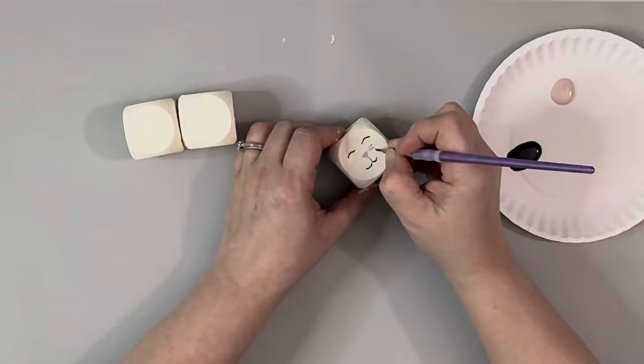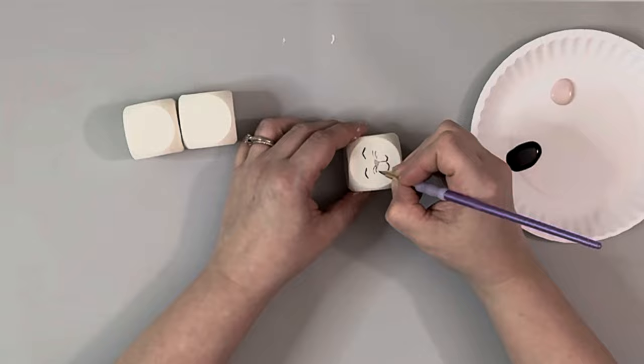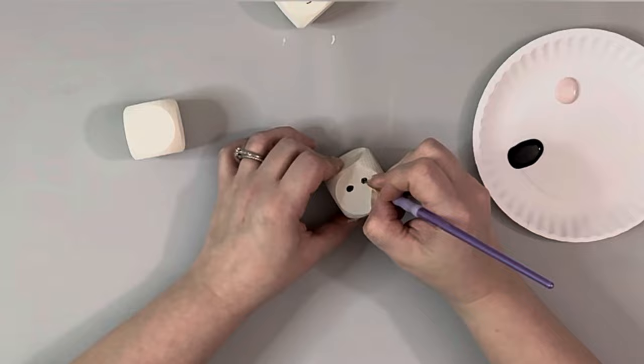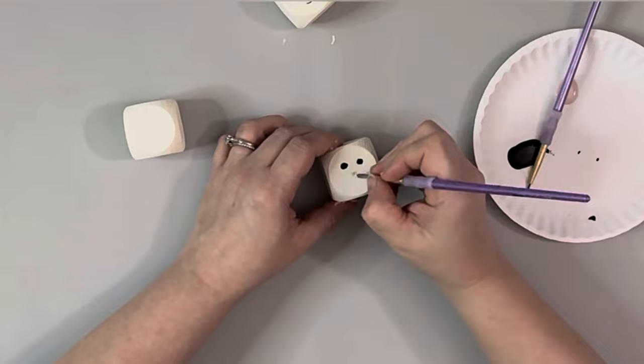I'm just using a really thin brush for the black to make sure the lines are nice and small. And then on the next one, I do rounded eyes with the black acrylic paint. You can definitely draw these on first. I just went for it with the paint. And then I again did the same thing for the nose and the mouth.